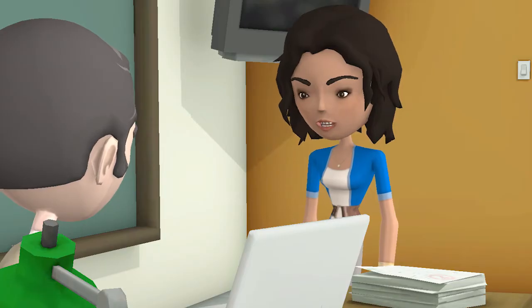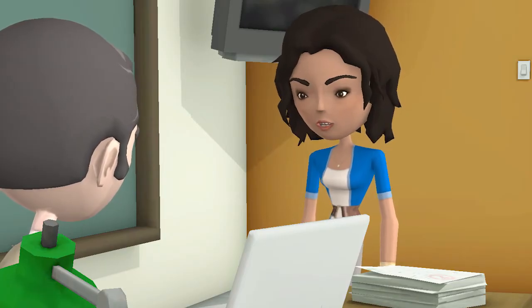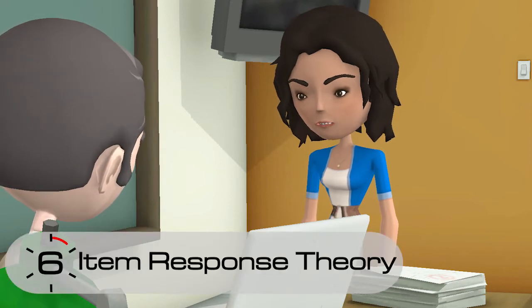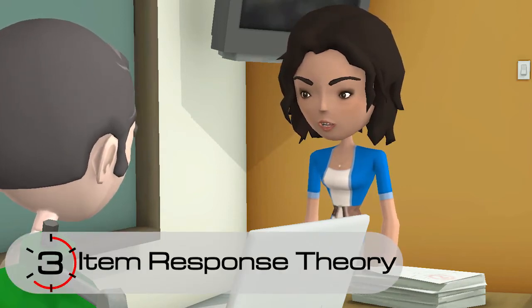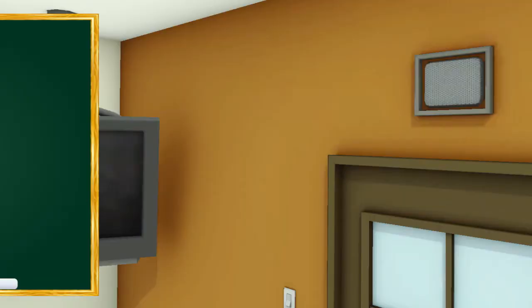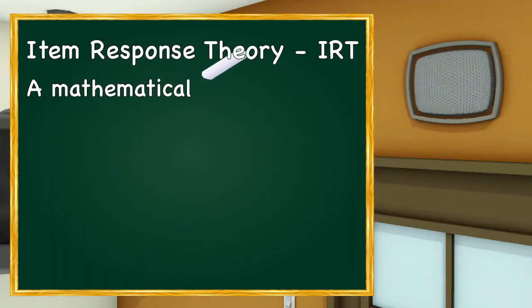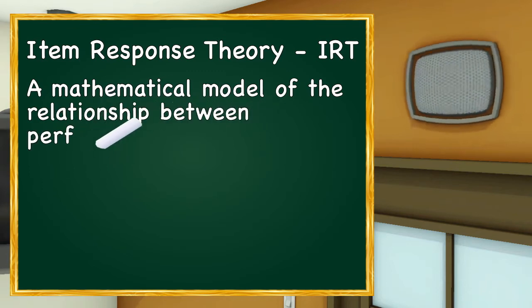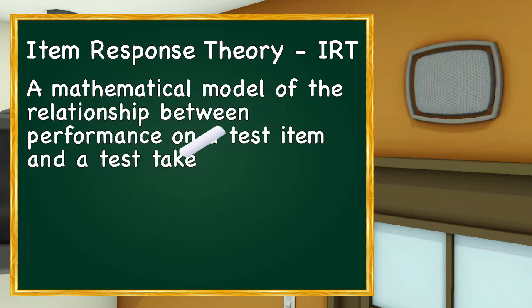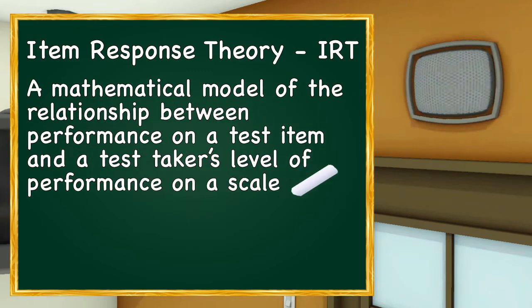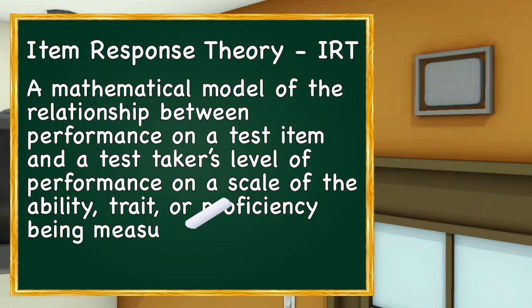ATI performs an analysis using psychometric techniques based in item response theory, or IRT, to create ATI's scale scores. Item response theory, IRT, is a mathematical model of the relationship between performance on a test item and a test taker's level of performance on a scale of the ability, trait, or proficiency being measured.